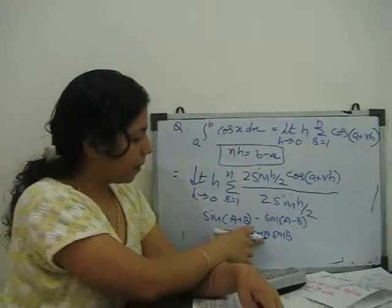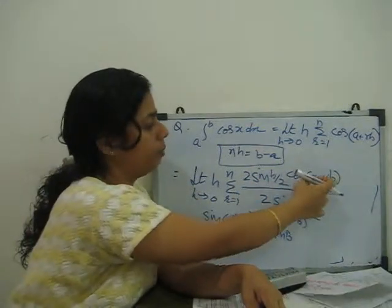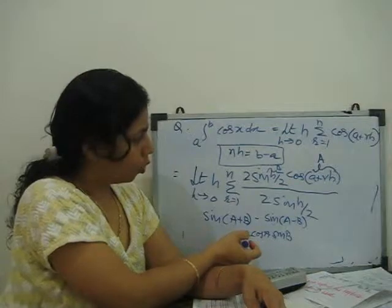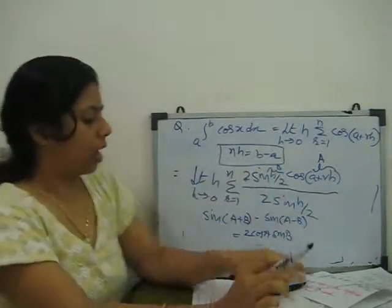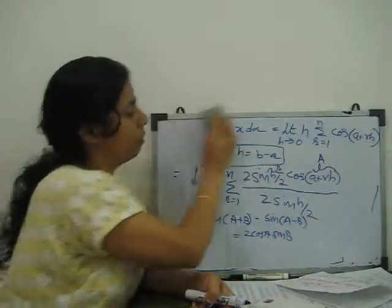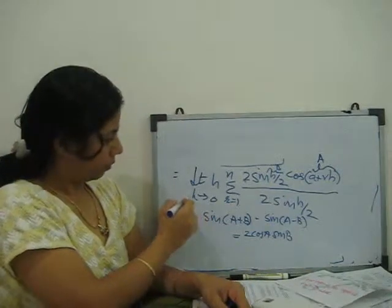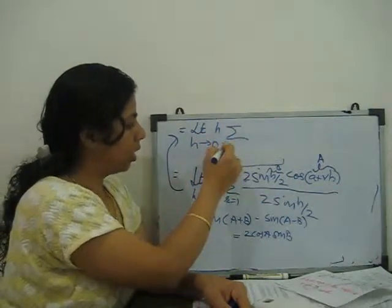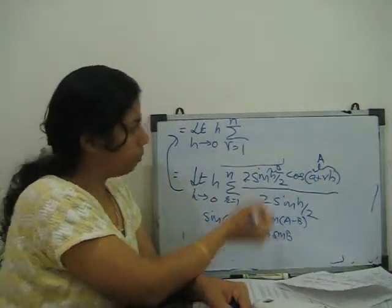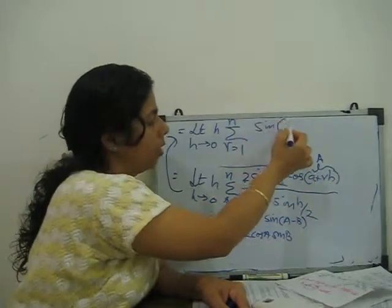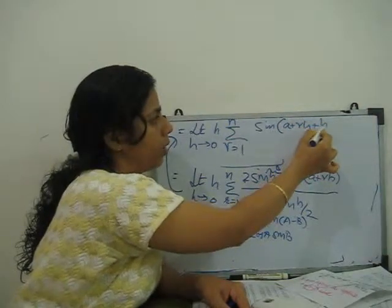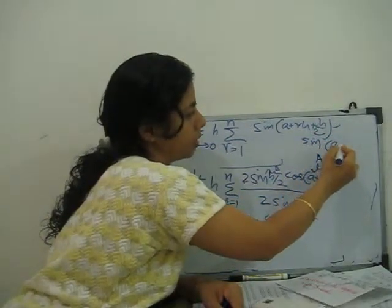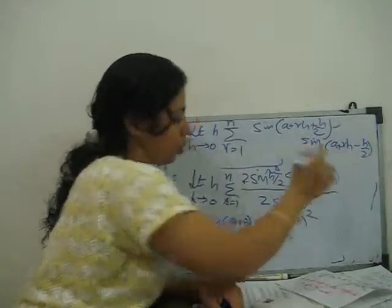So now we replace directly. In our expression, capital A is (a + rh) and capital B is (h/2). Using 2·cos(A)·sin(B) = sin(A+B) − sin(A−B), each term in the summation becomes sin(a + rh + h/2) minus sin(a + rh − h/2).